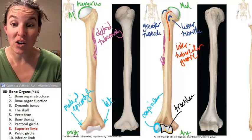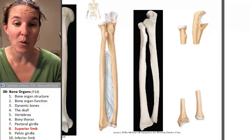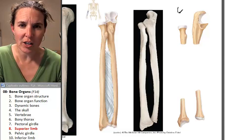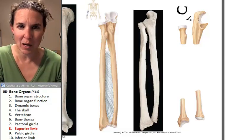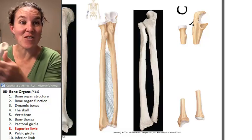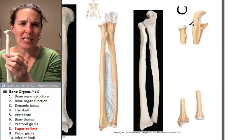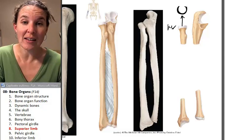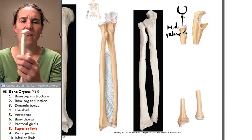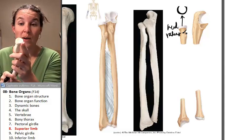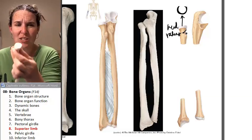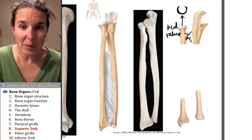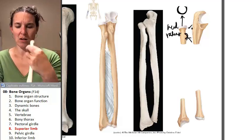Let's look at the ulna and radius and see where these things articulate. The capitulum is a rounded little bump, and the head of the radius is this round, twisty thing that articulates with the capitulum. The radius has a radial round proximal end — very clear and obvious. You also have the radial tuberosity on the radius, which is a bump on the surface of the radius.